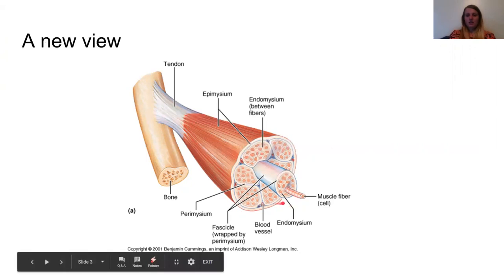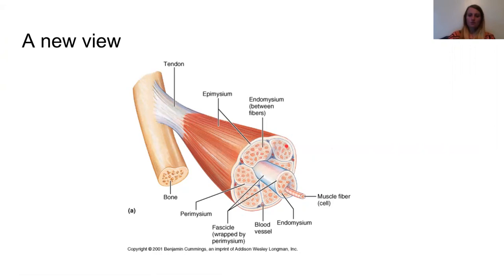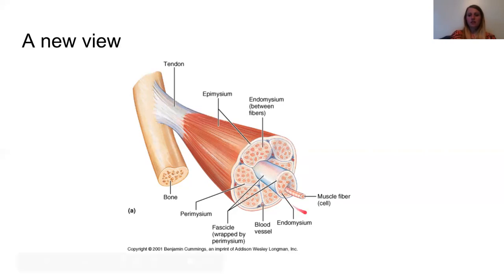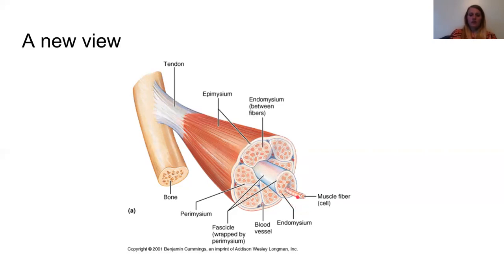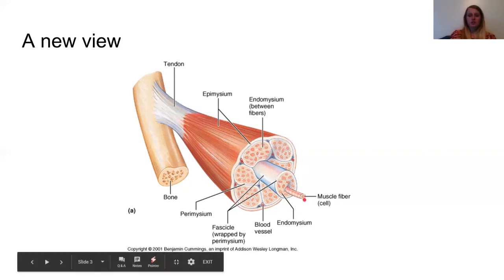And then we can see that we have these fascicles, these bundles of cell fibers or muscle cells, muscle fibers. It's just a bundle of them. And around each of these fascicles is your perimysium. It's in the middle. And then each of your fascicles is made of these muscle cells.